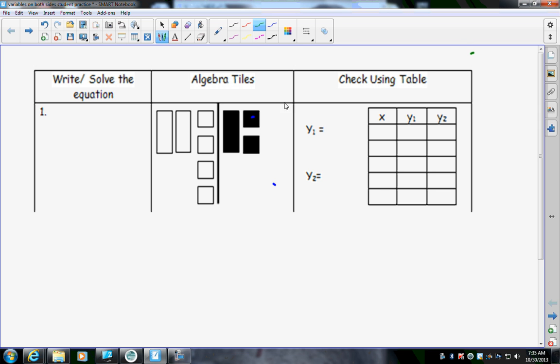I'm trying to get my pen to write here. There we go. Alright, so what I see, remember with these long tiles, those are your X's. So I have 2X, and then 1, 2, 3, 4, plus 4. That line represents equals. Then you have a negative X and minus 2.